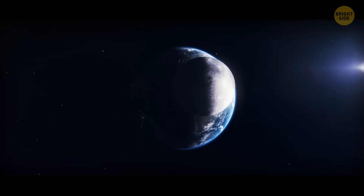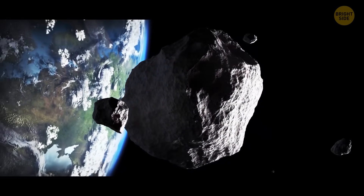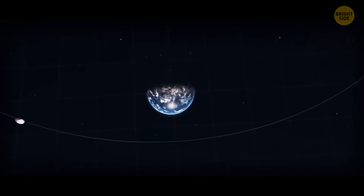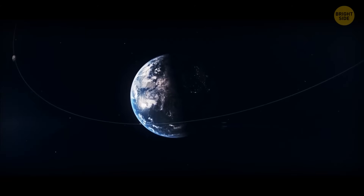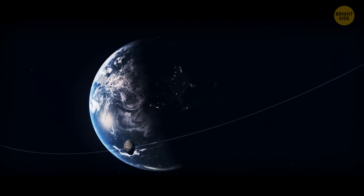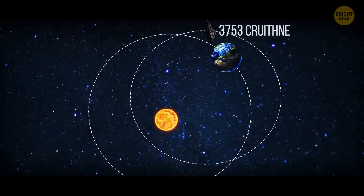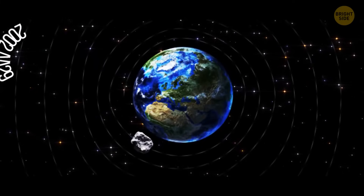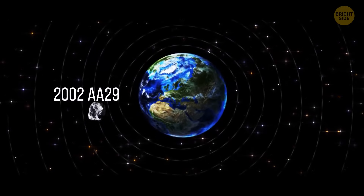We all know that Earth has one Moon, but there are two more asteroids — 3753 Carinia and 2002 AA29 — locked into co-orbital orbits with our planet. The first doesn't really circle around the Earth, but has a synchronized orbit that makes it look like it's following the Earth, while in reality it has its own specific path around the Sun. The other one, 2002 AA29, follows a horseshoe orbit around our planet, and its specific path brings the asteroid closer to us every 95 years.